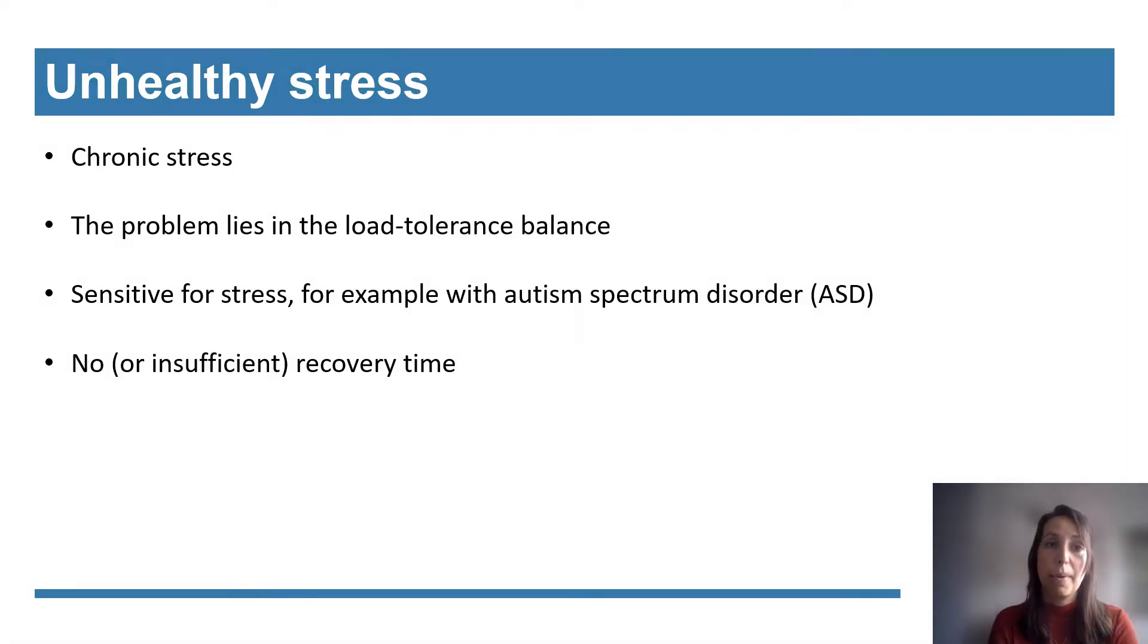Stress becomes unhealthy when it becomes chronic, and stress becomes chronic when the balance of stress is lost. For example, when there is no time to recover, or you apply an insufficient coping mechanism. There are also some groups of people who are already more vulnerable to experience a lot of stress, such as people with an autism spectrum disorder.